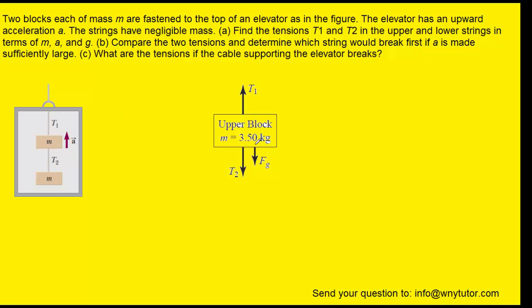We'll start with the free body diagram of the upper block, and it might be helpful to refer back to the picture as we discuss these forces. As with all objects, the upper block will have a gravitational force pointing downward, and we've labeled that force F sub g. The upper block is connected to two ropes, and the upper rope is going to be pulling upwards on this block. So we've labeled a force acting upwards, and we've labeled that T1, the T standing for tension.